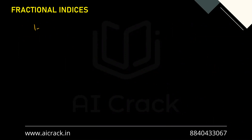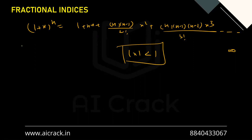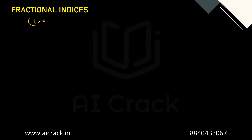So we can generalize: (1+x)^n = 1 + nx + n(n−1)/2! · x² + n(n−1)(n−2)/3! · x³ + ... to infinity, valid for |x| ≤ 1. This generic formula works for both fractional and negative indices. Now let's derive a simpler form specifically for negative integral indices: (1−x)^(−n) where n ∈ ℕ.